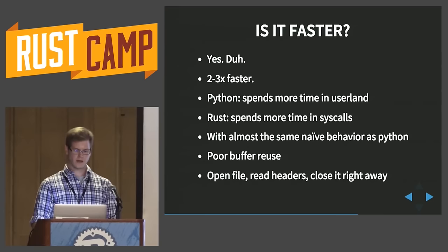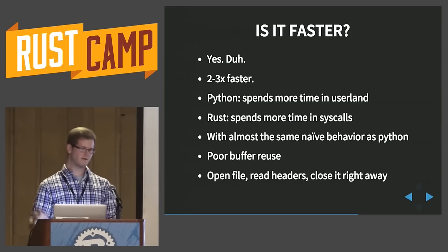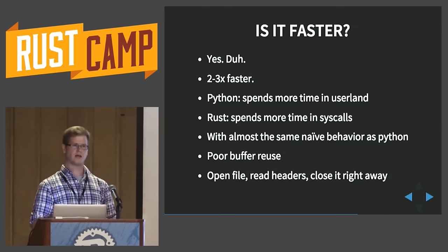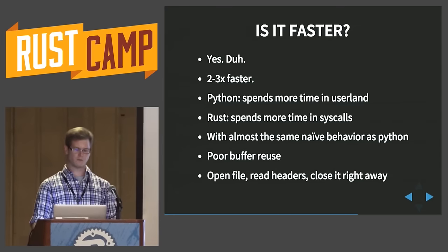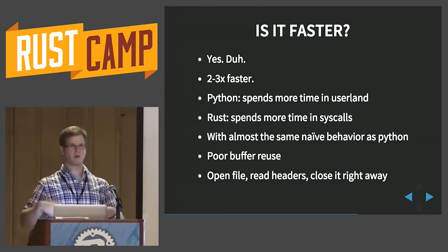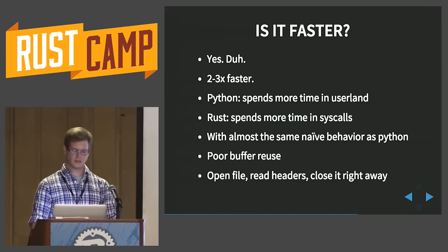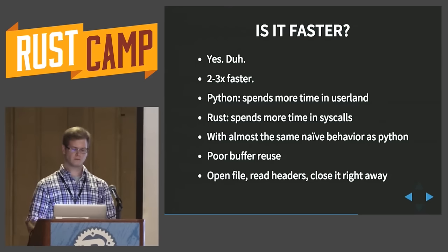Is it faster? Yeah. Well, I'm not surprised by that. But is it more readable? I think so. In Python it spends more time in user land, and in Rust it spends more time in syscalls. But it's this sort of API and communication that's a lot more interesting to me. I still have the same naive behavior as Python - you open and close Whisper files all the time, have to reparse the headers constantly, and there's some poor buffer reuse. But it's still faster, and I think that's cool.